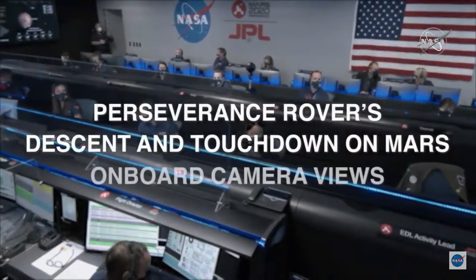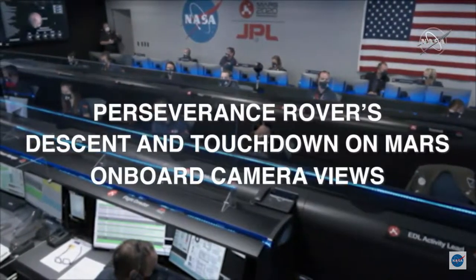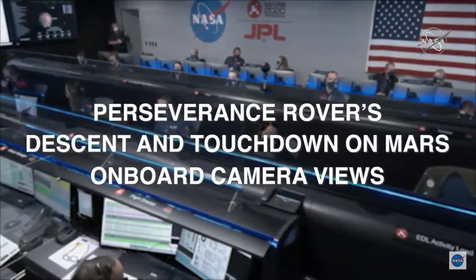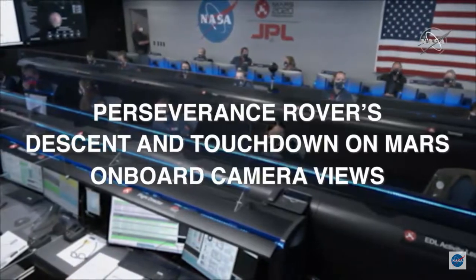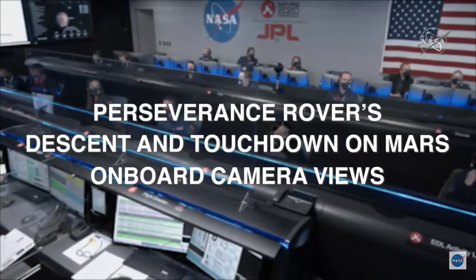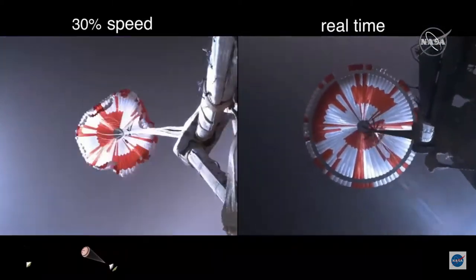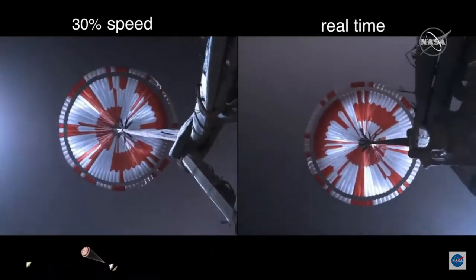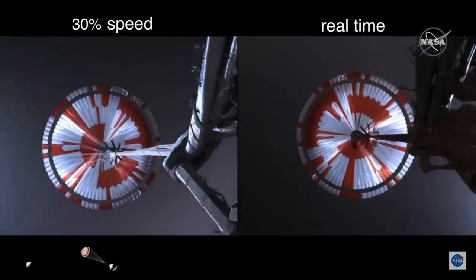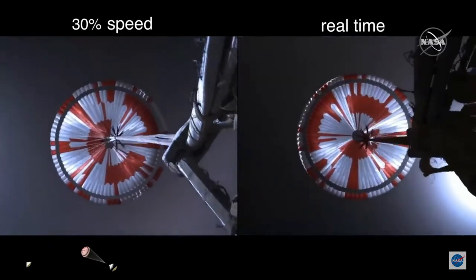We're starting to straighten up and fly right maneuver where the spacecraft will jettison the entry balance masses in preparation for parachute deploy and to roll over to give the radar a better look at the ground. Parachute indicate parachute deployed. Navigation has confirmed that the parachute has deployed and we're seeing significant deceleration in the velocity.